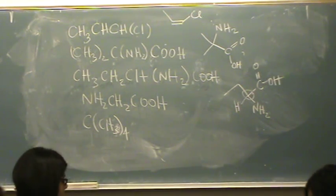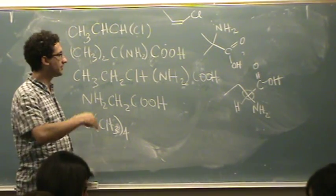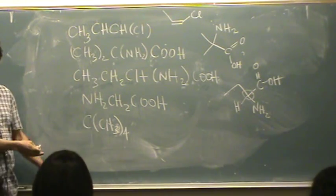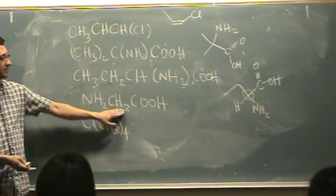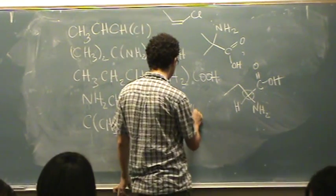That one's going to be optically active. I didn't draw R or S, but that one could be optically active if there's only R or S. This one, again, doesn't have four different groups. On the carbon, there's two hydrogens. This one only has three groups. This one, if you want to draw it out, will look like this.